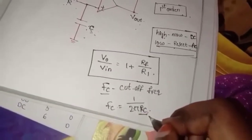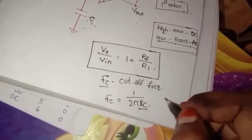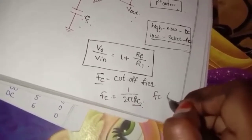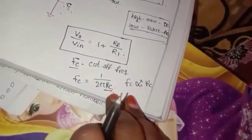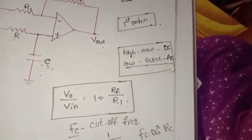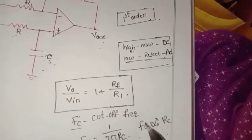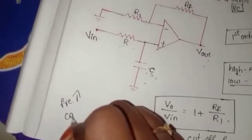Fc is inversely proportional to RC. When the frequency increases, the capacitor value decreases. Fc is inversely proportional to RC, so as RC increases, Fc decreases.